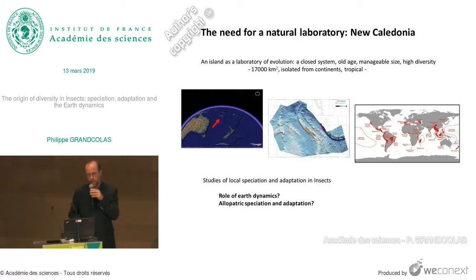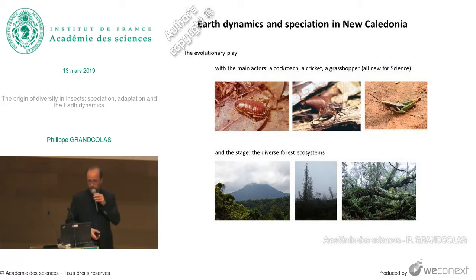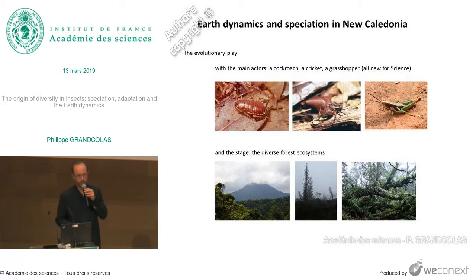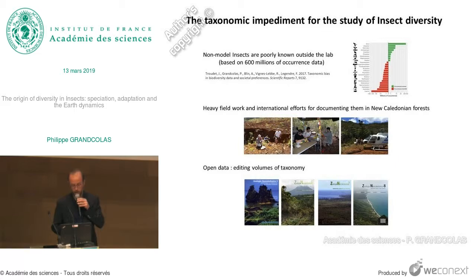I will try to show you briefly the role of Earth dynamics regarding the diversification of insects in this place, and to consider also how allopatric speciation has played a special role. The evolutionary players are not very fancy — they are very discreet, very modest, very humble — namely, cockroaches, grasshoppers, and crickets. Insects we are familiar with, which revealed to be very good models for evolutionary studies. The stage is the diverse forest ecosystems: some tropical forests, some araucaria forests, some cloud forests. So even if the island is not so big, it's a quite diverse place with many different locations.